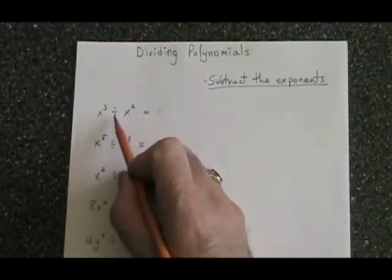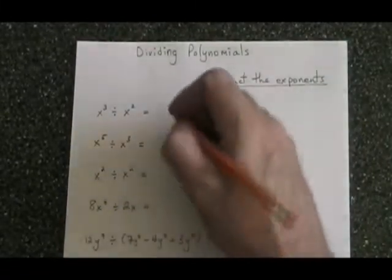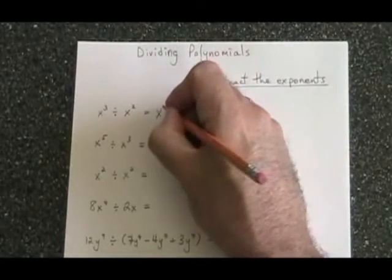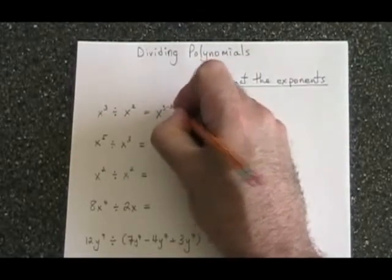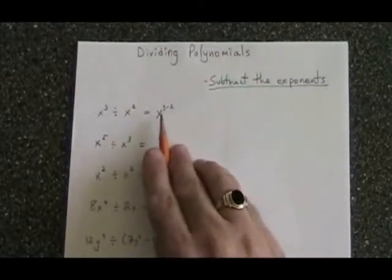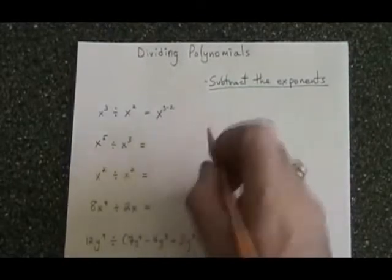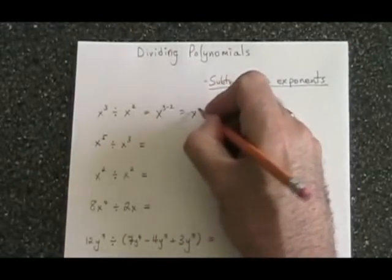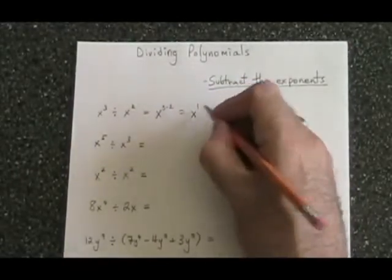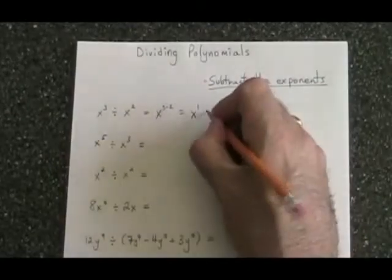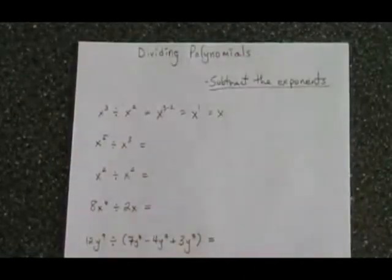Here we have x cubed divided by x squared. I'm going to write this as x to the power of 3 minus 2, showing that I'm subtracting the exponents. 3 minus 2 is 1, so therefore the answer is x to the 1. We don't have to write the 1 as an exponent, so we could express this just as x, and that's our answer.